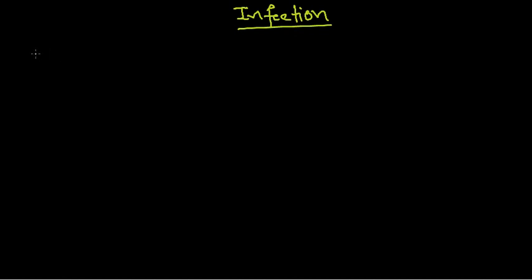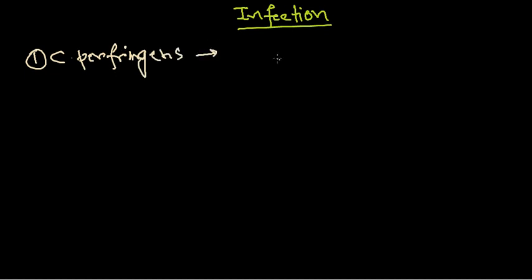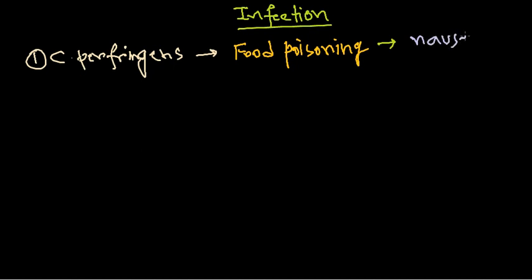The first type is Clostridium perfringens, which can cause food poisoning. For food poisoning caused by Clostridium perfringens, the onset usually results in nausea, vomiting, and diarrhea after the onset.